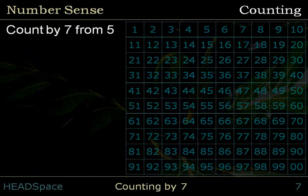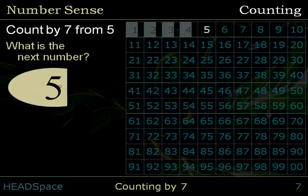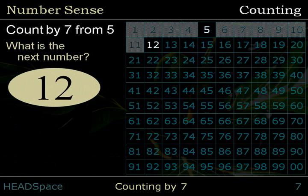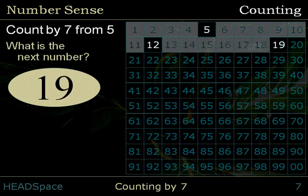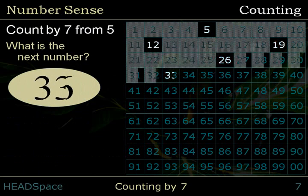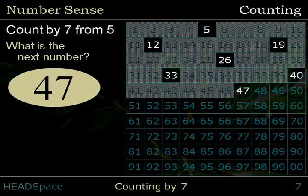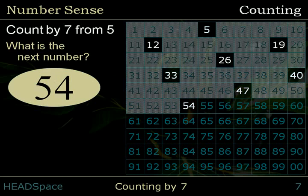Count by 7 from 5. What is the next number? 5, 12, 19, 26, 33, 40, 47, 54, 61.